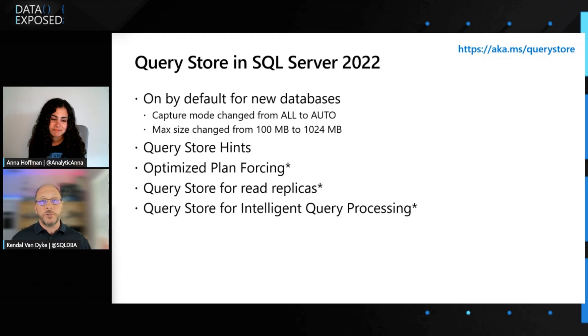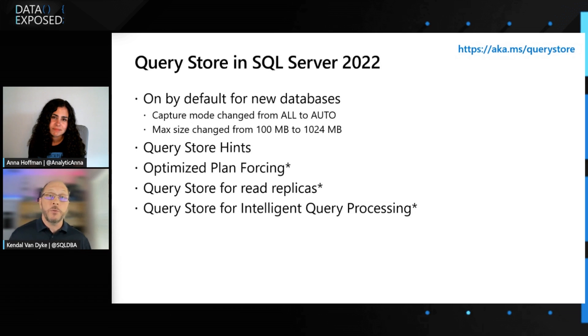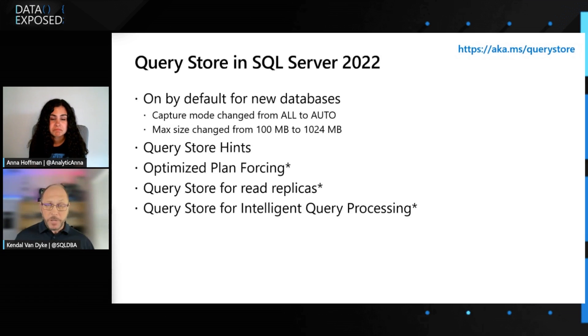We're bringing in intelligent query processing features that will also use query store hints. Historically, one of the challenges with IQP features is that if you restart your instance or fail over to a secondary replica in an availability group, you lose all of the things that you've learned. So we're integrating a new section of query store called the feedback store, for IQP feedback mechanisms — CE feedback, DOP feedback. The idea is that we persist those in the query store so that when you restart, fail over, or move your database to another instance, all of the things that have been learned about your performance get retained and you can pick right back up without having to relearn all those mechanisms.